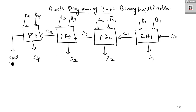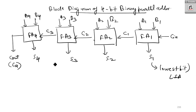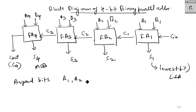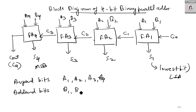From FA4 you will get the carry out, which you can take as C4 or Z4. S1 is the LSB and S4 becomes the MSB. If there is a carry out, we can take it separately. The augend bits are A1, A2, A3, and A4, and the addend bits are B1, B2, B3, and B4.